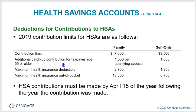For deductions for contributions to HSAs, the 2019 contribution limits include amounts for both family and self-only coverage. The table shows contribution limits, the additional catch-up contribution for taxpayers age 55 or older, maximum health insurance deductible, and maximum health insurance out-of-pocket. HSA contributions must be made by April 15th of the year following the year the contribution was made.